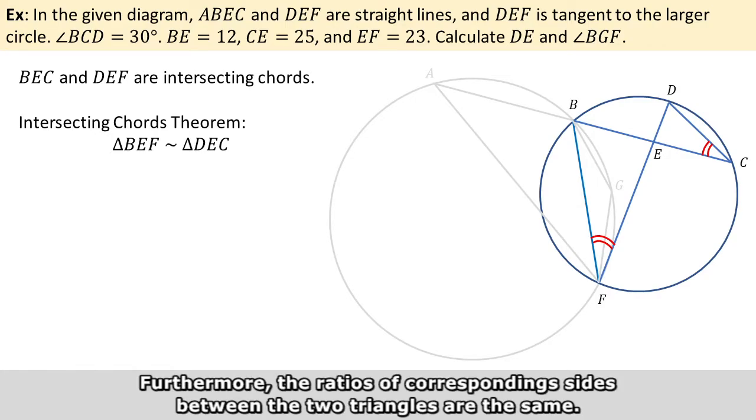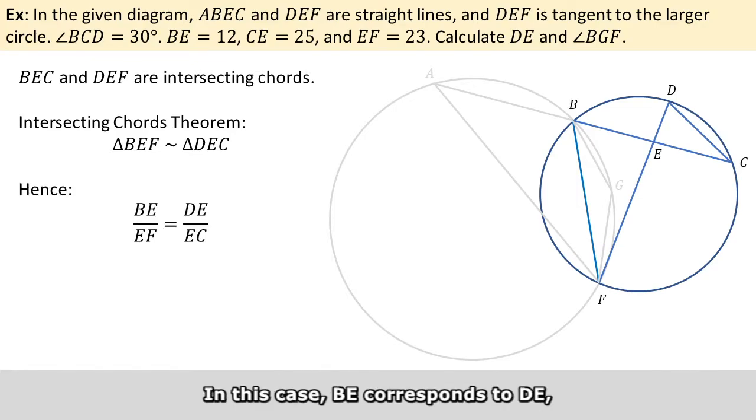Furthermore, the ratio of corresponding sides between the two triangles are the same. In this case, BE corresponds to DE and EF corresponds to EC.